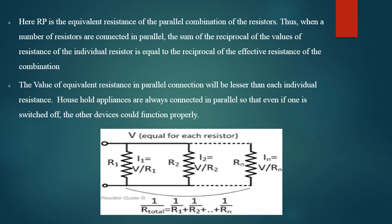Next is resistance in parallel. In a parallel circuit, resistances are connected in parallel. I1 current flows through R1, I2 current flows through R2, and I3 current flows through R3. There is a difference in the equation — it is reciprocal. To calculate the total resistance, you sum the reciprocals: 1 by R1 plus 1 by R2 plus 1 by R3 and so on. Voltage is the same across all, but the current through each resistance varies. The equivalent resistance in a parallel connection is much lesser than the individual resistance.